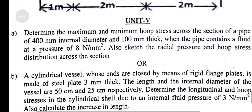Unit 5, Question A. Determine the maximum and minimum hoop stress across the section of a pipe of 400mm internal diameter and 100mm thick, when the pipe contains a fluid at a pressure of 8 N/mm². Also sketch the radial pressure and hoop stress distribution across the section.